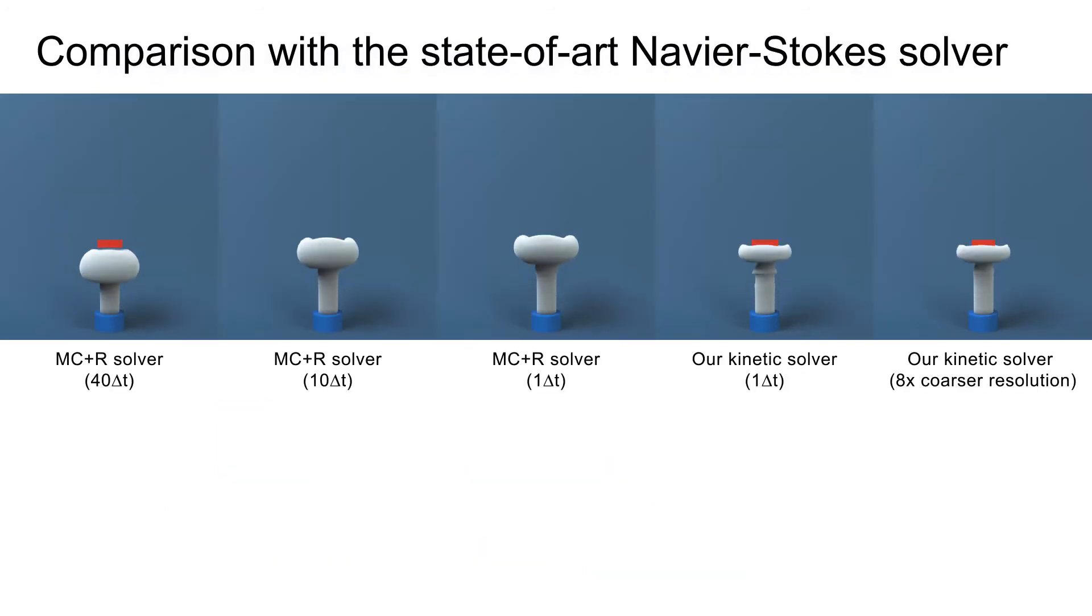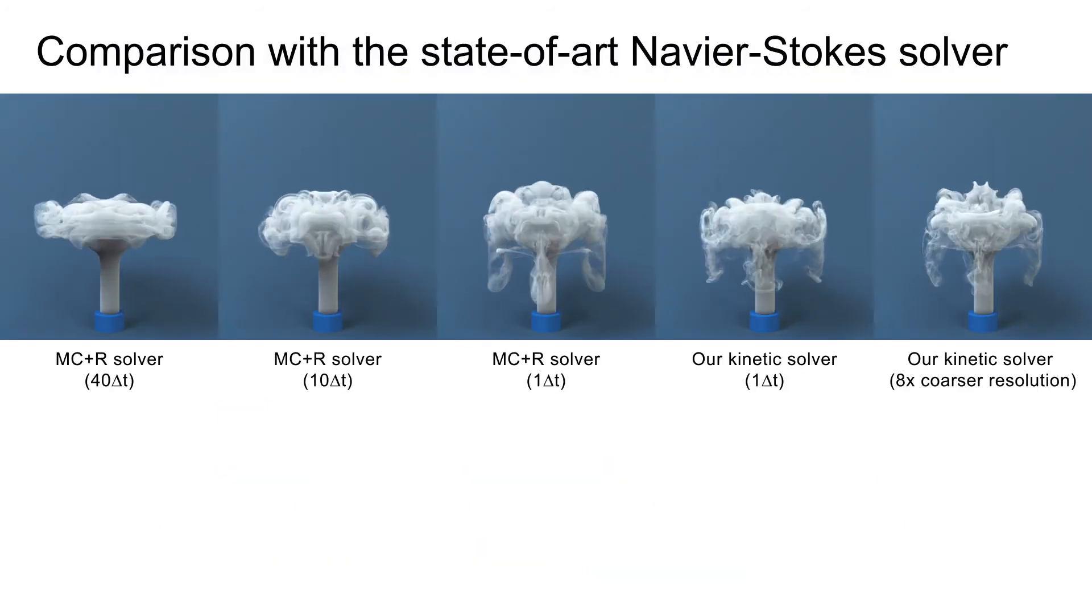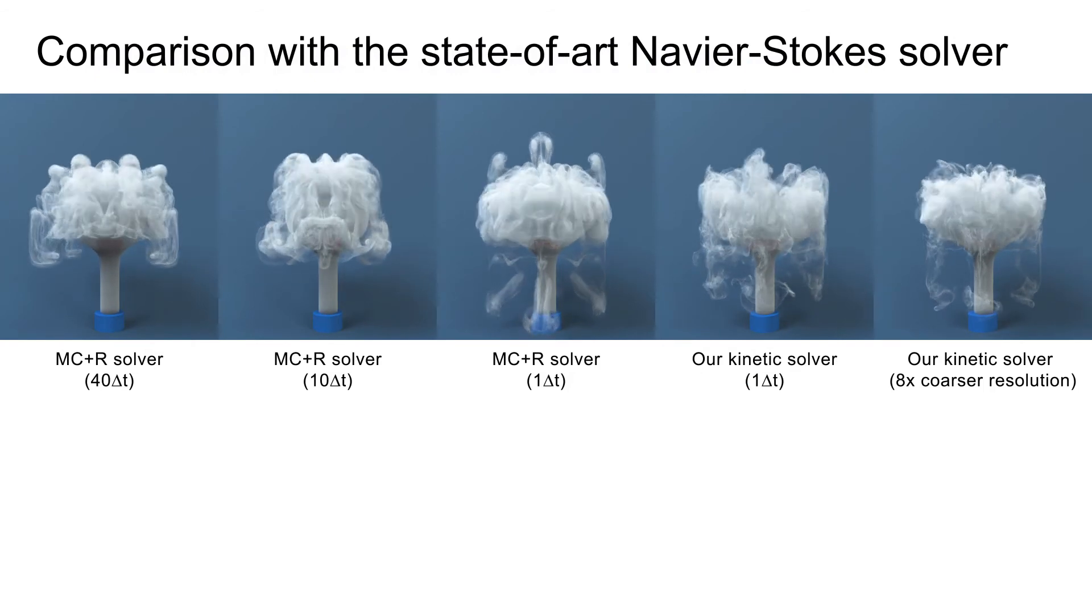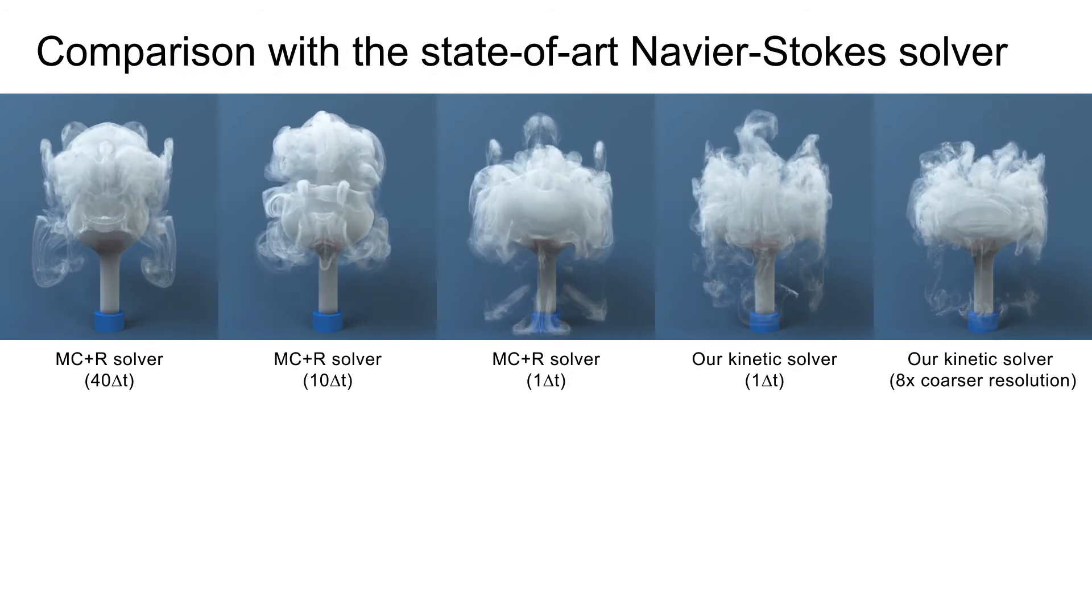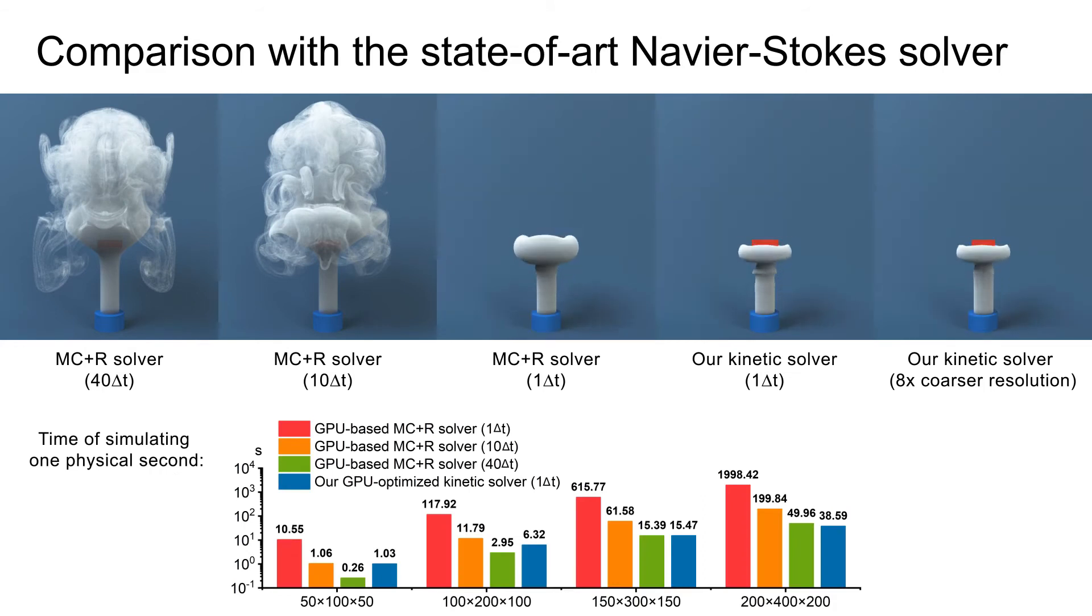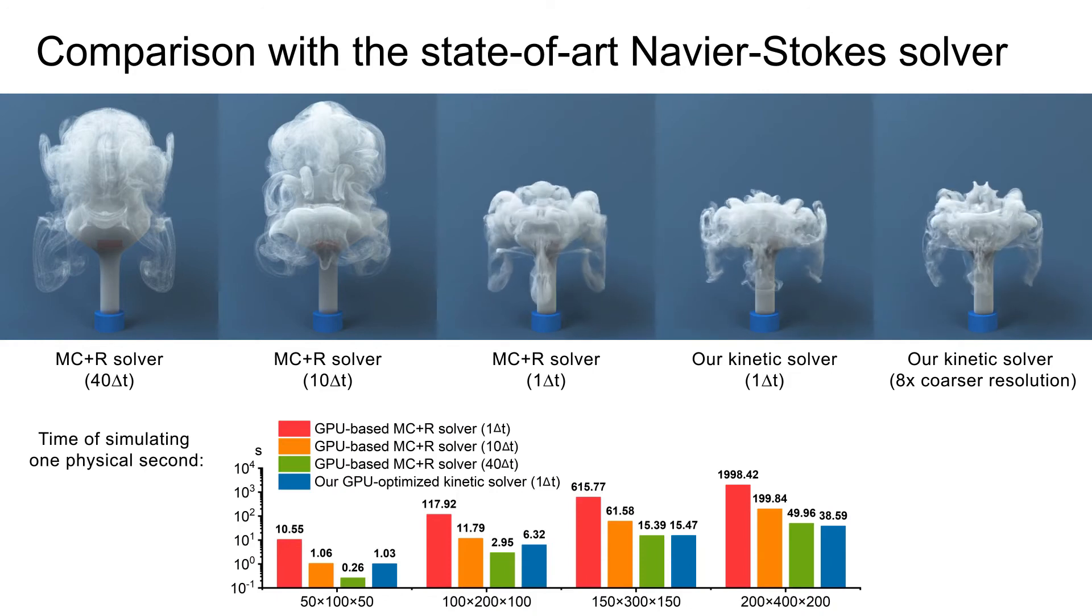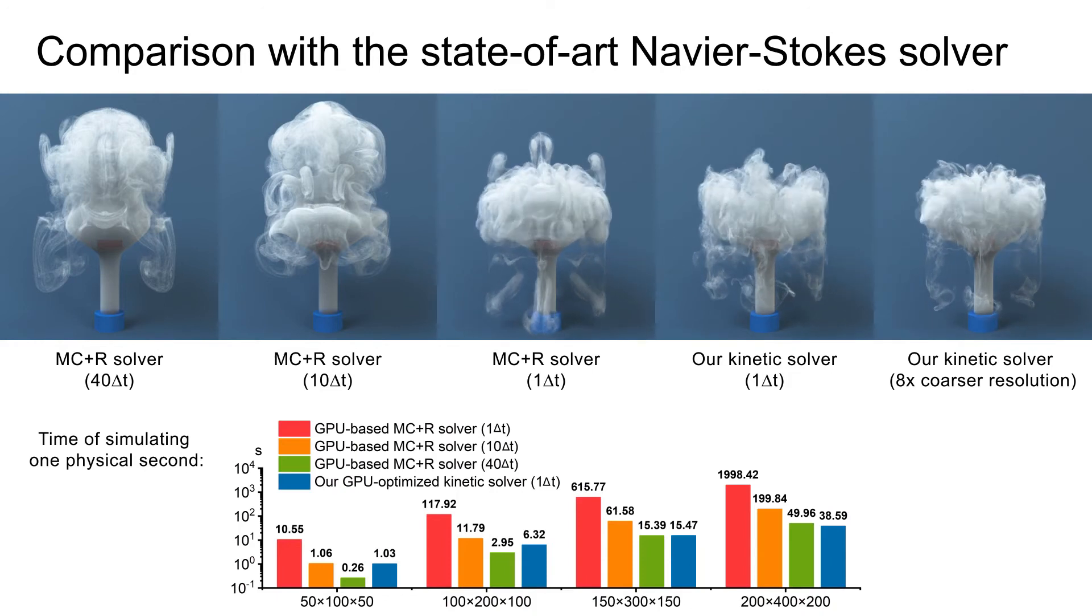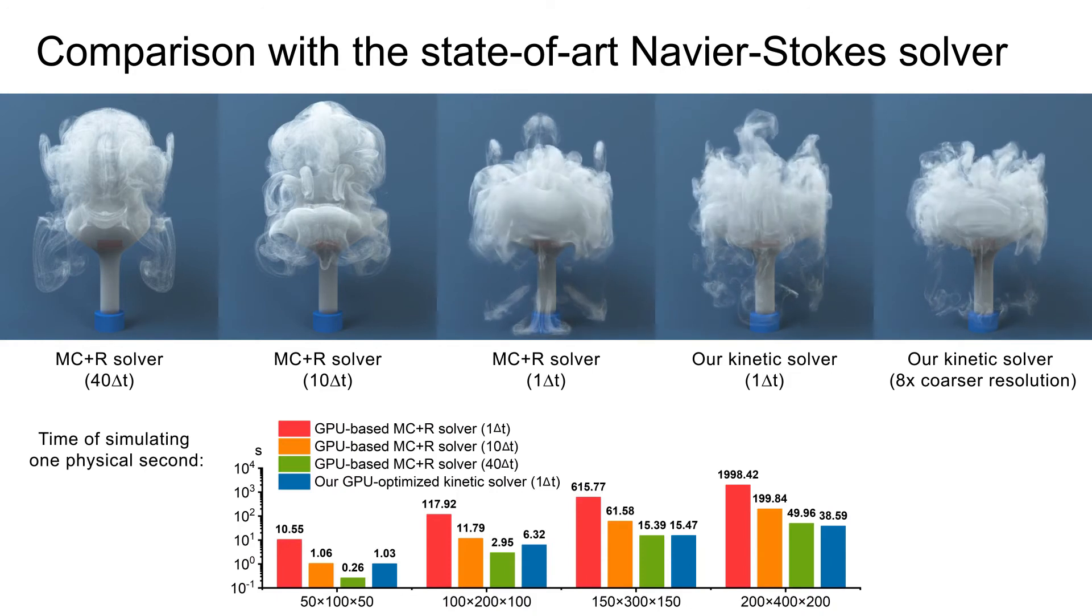We also compare with reflection-advection McCormack solver using different time step sizes and under different grid resolutions, showing superior performance improvement with similar level of visual quality. Note that due to higher convergence of our solver, we can obtain similar visual quality at a lower grid resolution, but with even larger performance improvement.